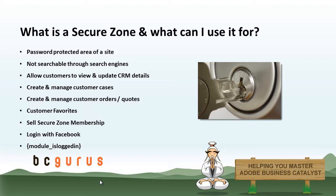So what is a secure zone capable of doing in BC? First, it can allow customers to view and update CRM details. The customer can log into a secure zone and edit and update their account information without any help from the admin. They are able to edit both system fields and custom CRM fields that you create in the backend. You can also create and manage customer cases through a secure zone. The customer can log in and look up the status of each of the cases they have submitted — a case is just another name for a web form submission.